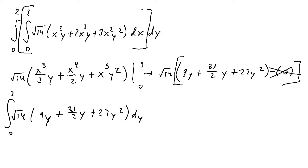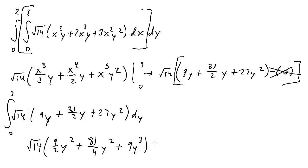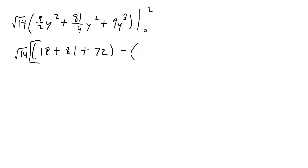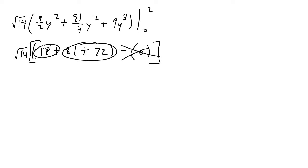√14 is a constant, so leaving it outside: the integral of 9y is 9/2 · y², the integral of 81/2 · y is 81/4 · y², and the integral of 27y² is 9y³. Evaluating from 0 to 2: y=2 gives 9/2·4 = 18, plus 81/4·4 = 81, plus 9·8 = 72. Plugging in 0 gives 0. Then 81 + 72 = 153, and 153 + 18 = 171. So the final answer is 171√14.